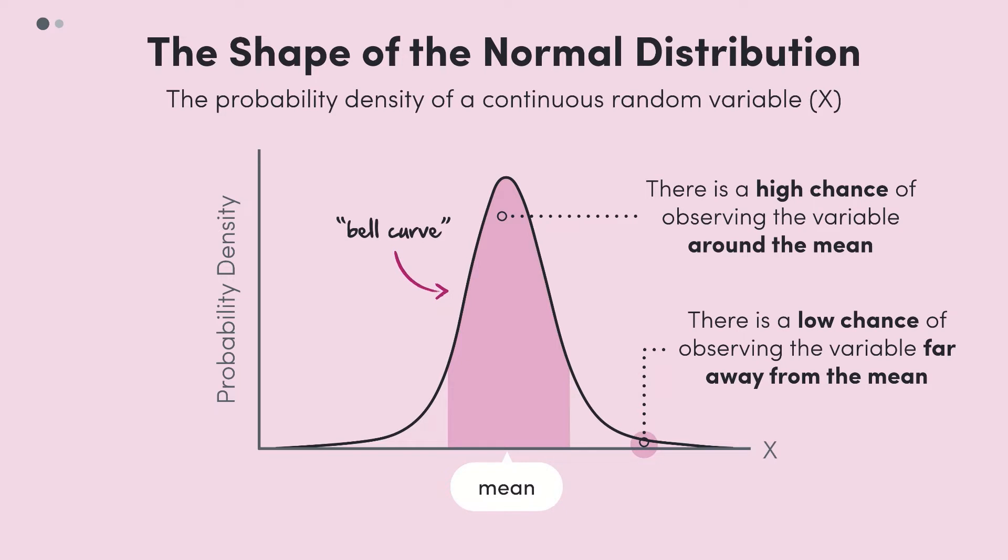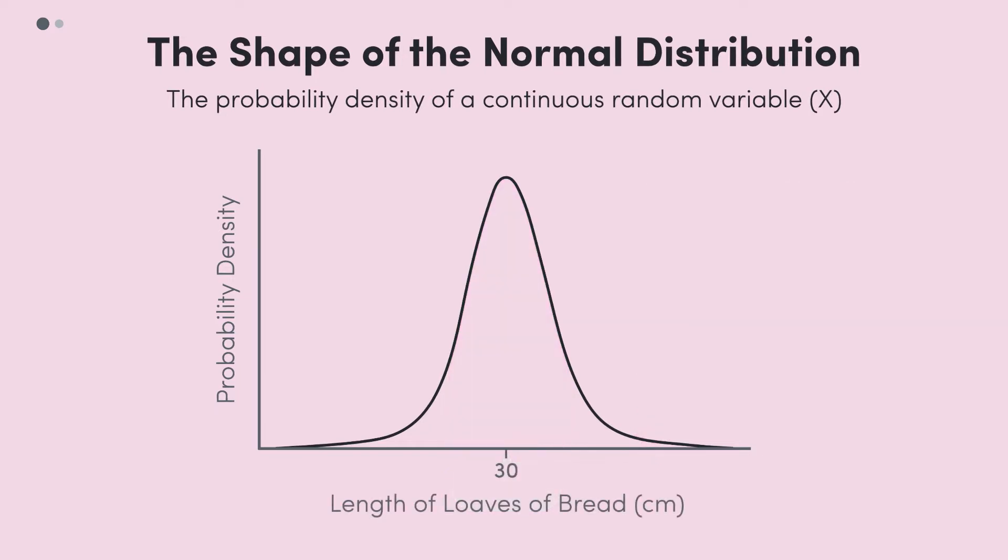Let's say that we're bakers who bake 30 centimeter loaves of bread. Well, when we say 30 centimeters, that's their length on average. Most of the time we will get loaves that are between 28 and 32 centimeters, which is pretty close to the mean of 30 centimeters. This is why we have the bulk of our distribution around the mean. Most of the time we expect to get things correct in the baking process.